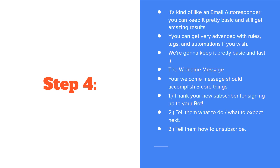Step four is where we get into the meat of this — we want to create our chatbot and do it quickly. A good way to look at this is if you use any type of email autoresponder, it's kind of like that. If you think bots are super complex or technical, they can be, but if you think of it like an email autoresponder, we can keep things basic and still get some pretty amazing results. Later on you can get more advanced with different rules, tags, and automations, but for now we're going to keep things basic and fast.